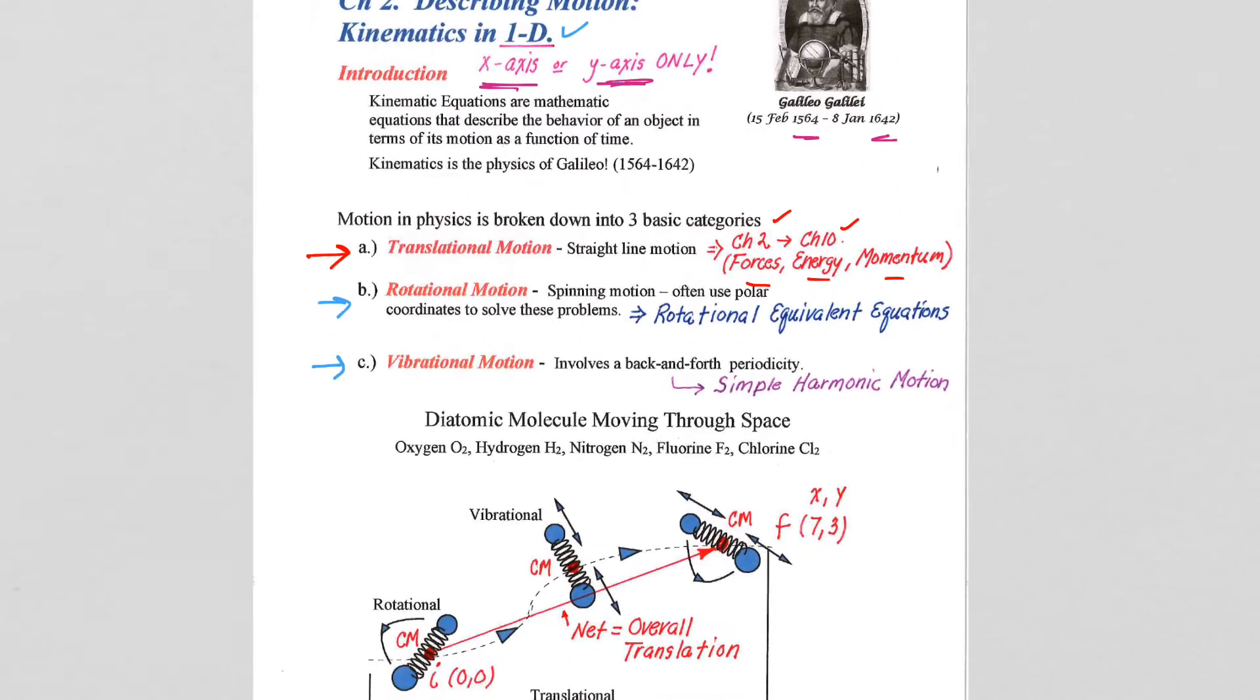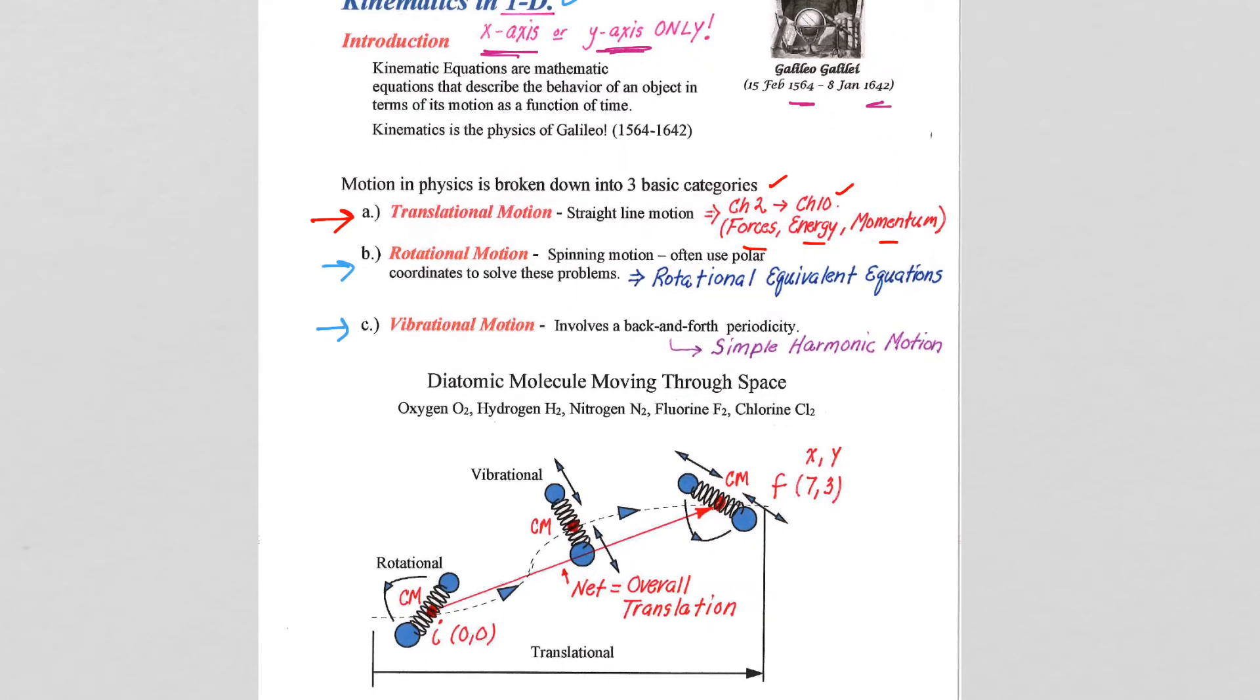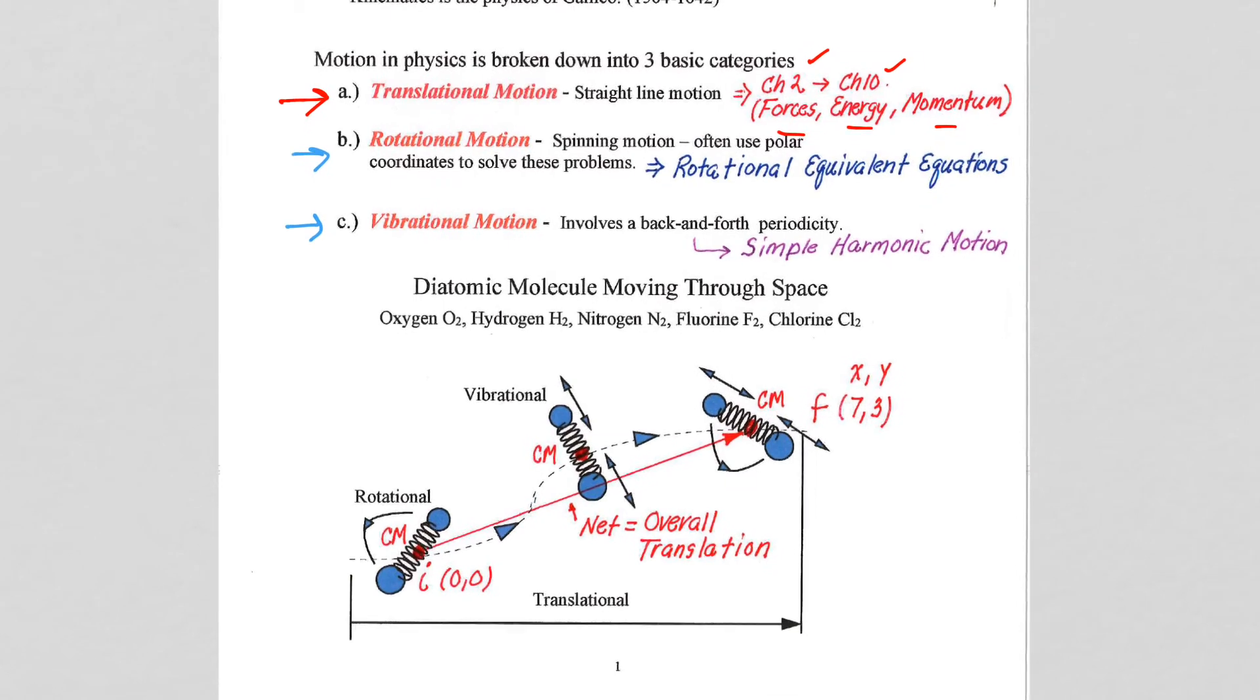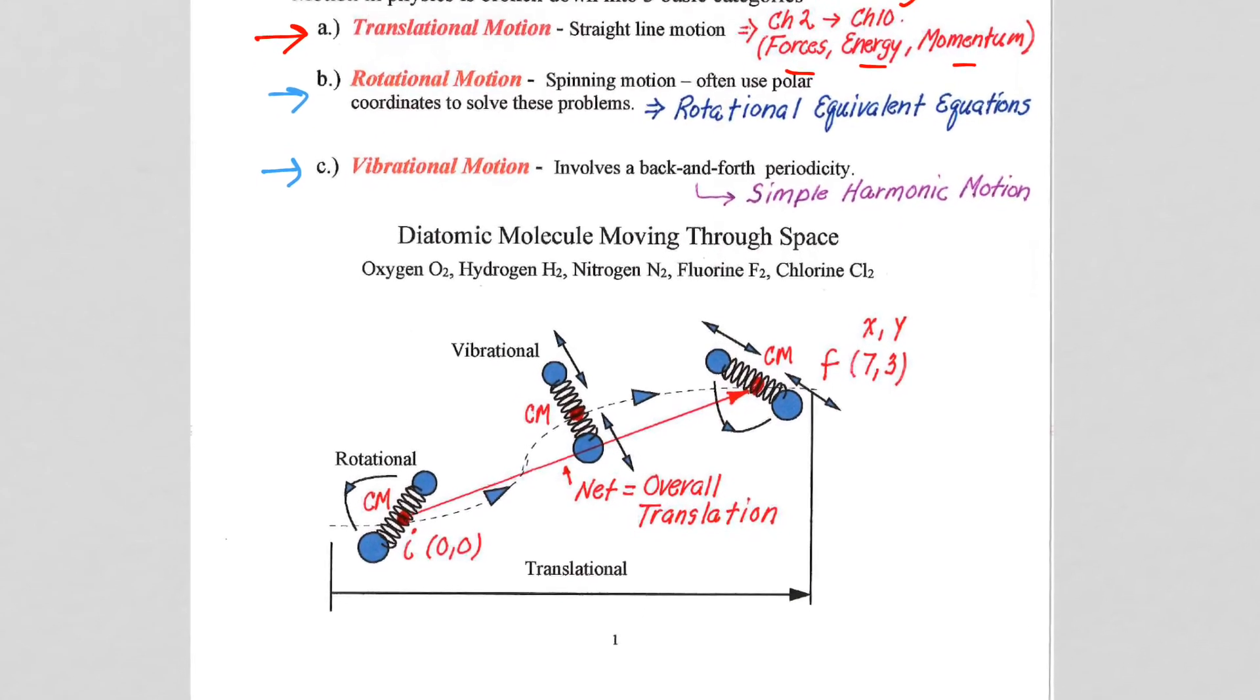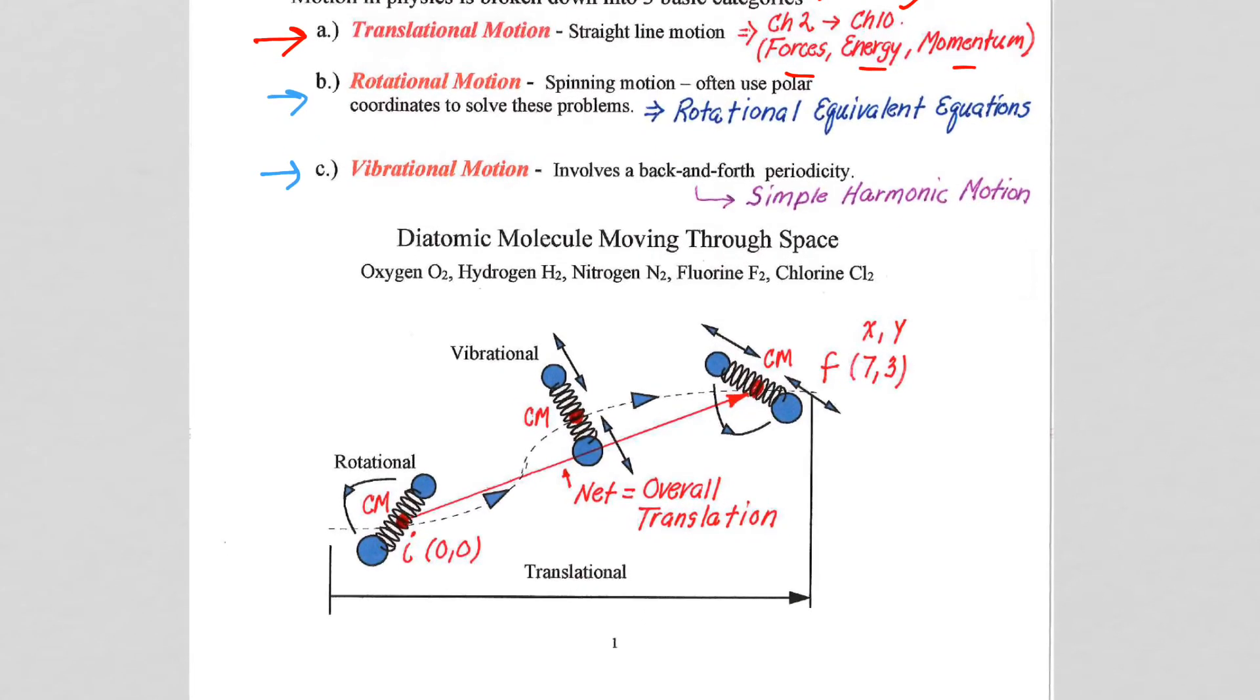Well, to give you a notion of how all three of these types of motion, translational, rotational, and vibrational, come together in a single event for an object, you've all had chemistry. So, here I'm looking at an example of just a diatomic molecule. So, two atoms connected by a molecular bond like oxygen, hydrogen, nitrogen, for example, just floating through the atmosphere, floating through the room that you're sitting in.